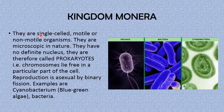Starting with kingdom Monera: monerans are single-celled, motile or non-motile organisms. They are generally microscopic in nature. They have no definite nucleus and are therefore called prokaryotes — prokaryotic organisms — meaning their chromosomes lie free in a particular part of the cell. Their reproduction is asexual by binary fission. Examples are cyanobacteria, also called blue-green algae, as well as other kinds of bacteria and archaea.